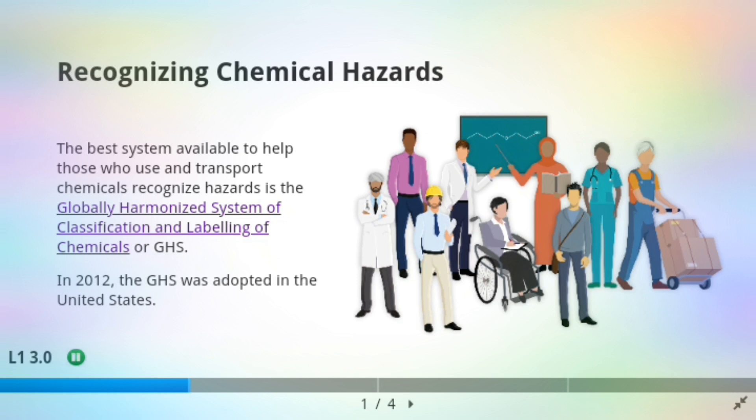Recognizing Chemical Hazards: The best system available to help those who use and transport chemicals recognize hazards is the Globally Harmonized System of Classification and Labeling of Chemicals, or GHS. In 2012, the GHS was adopted in the United States.